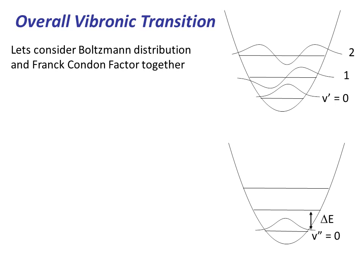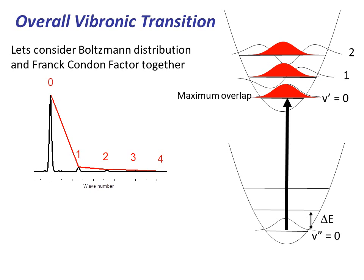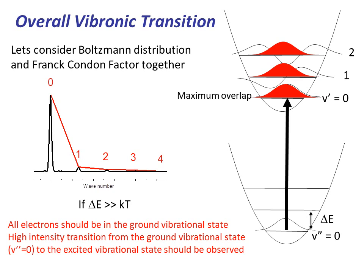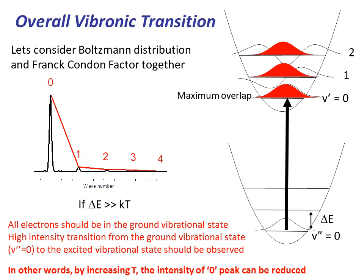Now let's consider the overall vibronic transition taking into account Boltzmann distribution and the Franck-Condon factor. From the Franck-Condon principle, we learned that the most likely transition is the one that has most overlap with the excited state wave function. If delta E, the energy difference between the adjacent vibrational states, is much greater than kT, the intensity of peak zero will be reinforced since all the electrons are in the ground vibrational state. However, if we increase the temperature, we can reduce the population of electrons in the vibrational ground state. As a result, the intensity of peak zero can be reduced even though maximum wave function overlap is achievable.